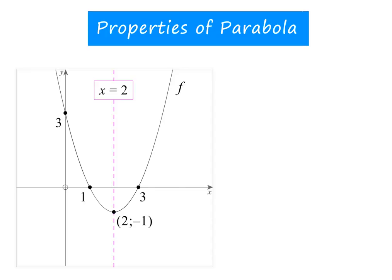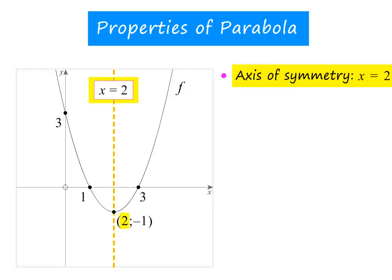In this lesson we will discuss the properties of a parabola. A parabola always has an axis of symmetry. The x-coordinate of the turning point gives the equation of this axis of symmetry.